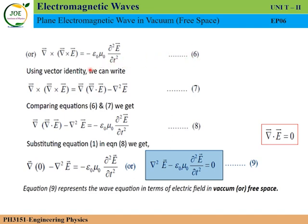Now, using a vector identity: del cross del cross E equals del of del dot E minus del-squared E. This is the seventh equation, and you need to memorize this because it is a direct identity.